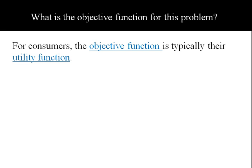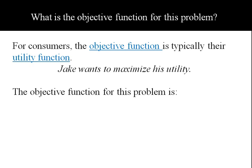Now what's the objective function for this problem? Well, for consumers the objective function is typically their utility function. I'd say 99 times out of 100 when you do a consumer problem they'll be maximizing their utility as their objective. So the objective function for this problem then is just our utility function U equals F times C.